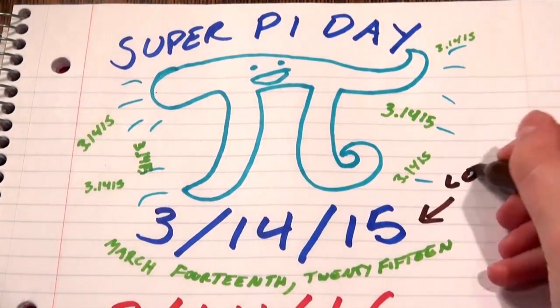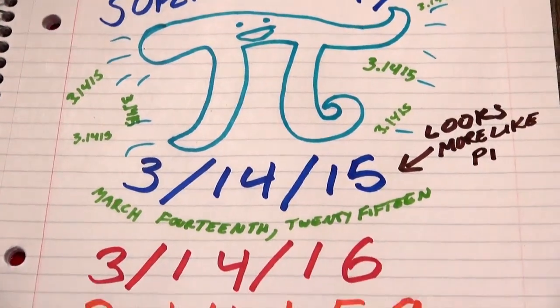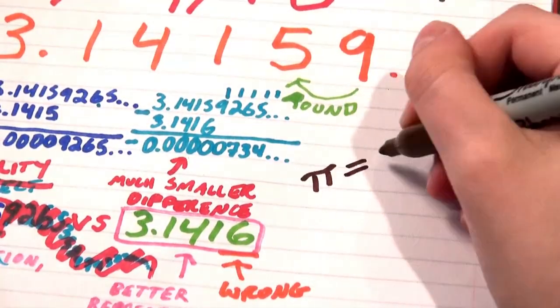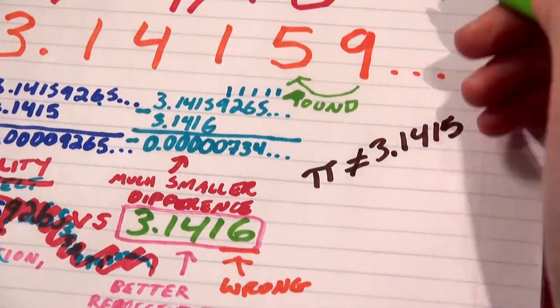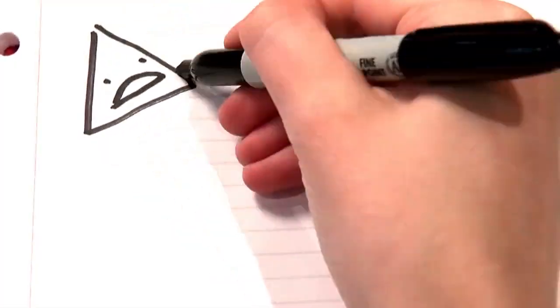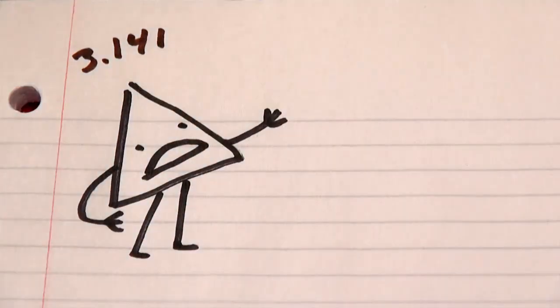People would rather have something that looks more like Pi than something that is more like Pi. Equality used to mean something, something more than the keeping up of appearances, a paying lip service to every digit that you do show, rather than say, look,